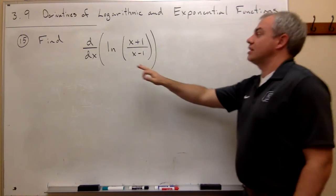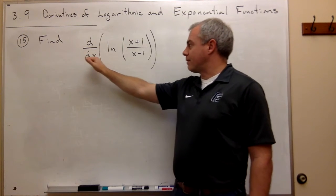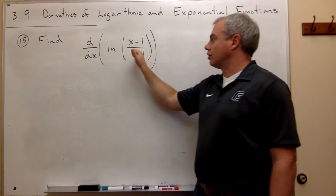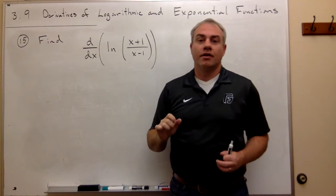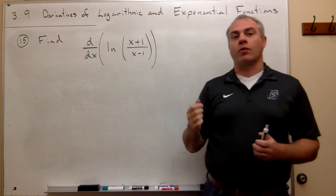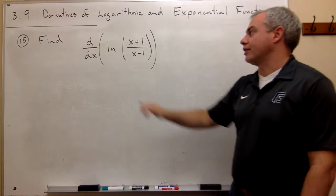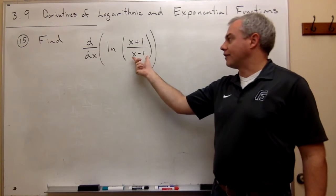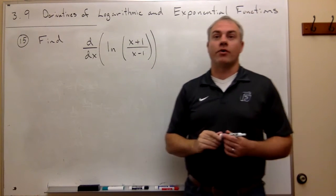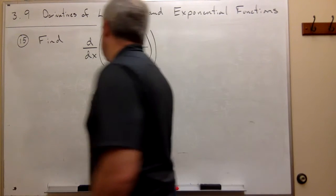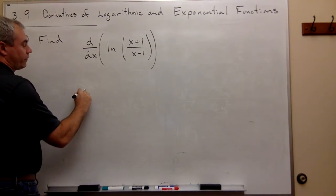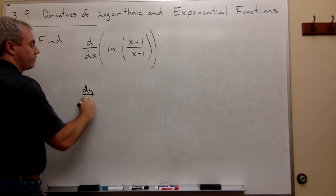So the first thing we see is if we're trying to find the derivative with respect to x of a natural log of something, then there's a very specific way that we take the derivative of the natural log of a thing. And that is that we always start out by looking at, we're trying to find dy/dx.